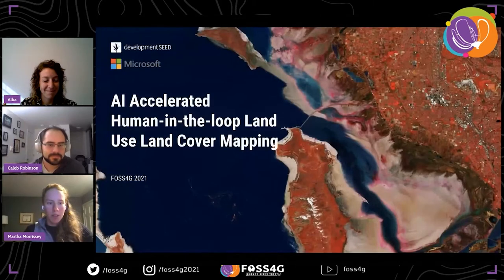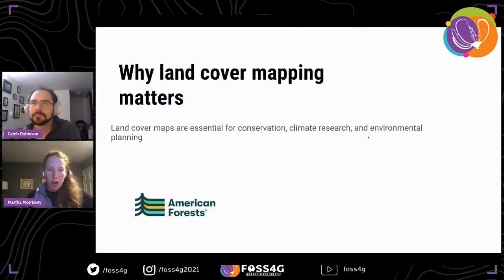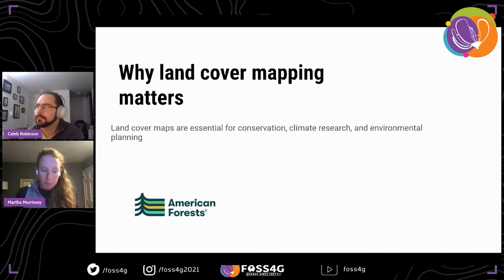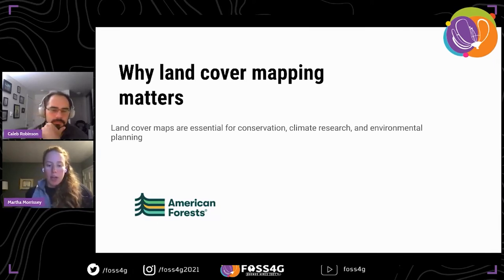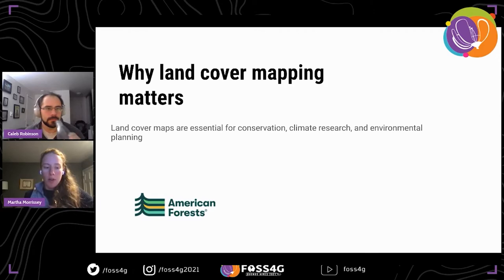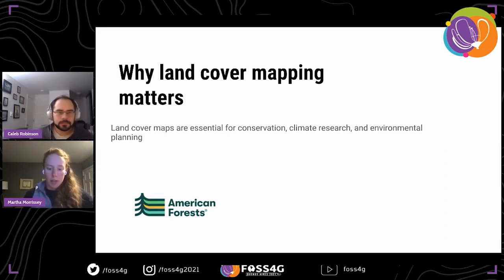We're presenting about land use land cover mapping. Before we dive in, a high-level overview of why land cover mapping matters: land cover maps are essential for conservation, climate research, and environmental planning. For example, a non-profit called American Forests works to understand how trees are distributed across urban areas in the United States and assigns each urban area a tree equity score, because trees are not evenly distributed — there's a higher concentration in wealthier areas.